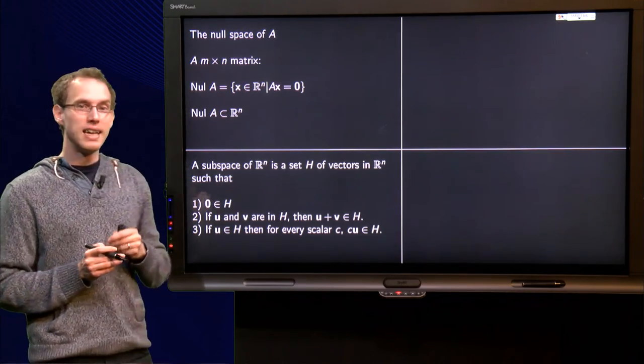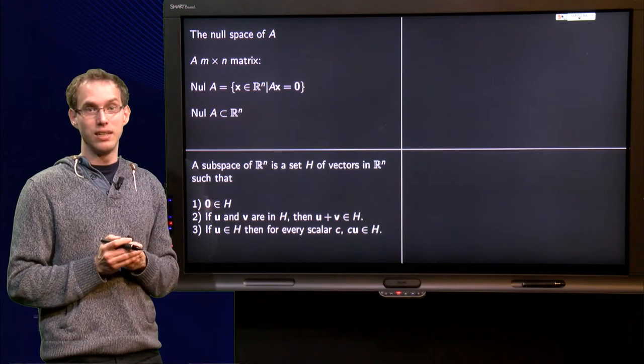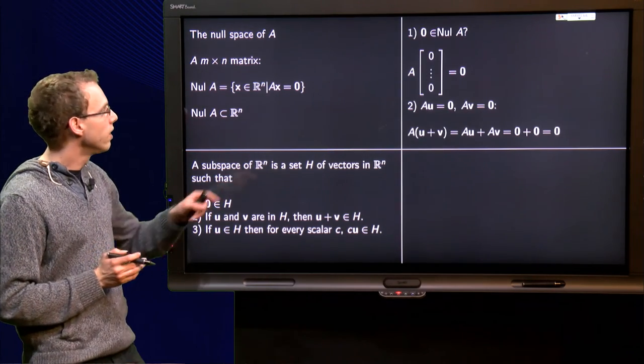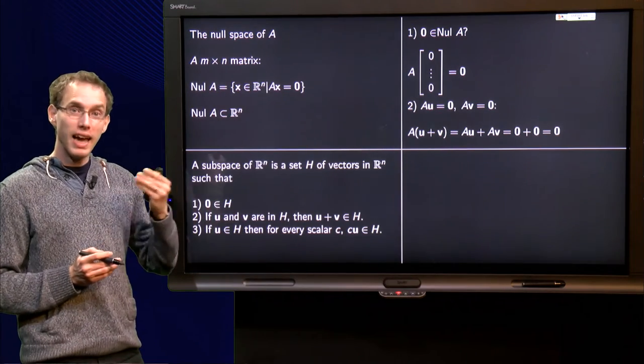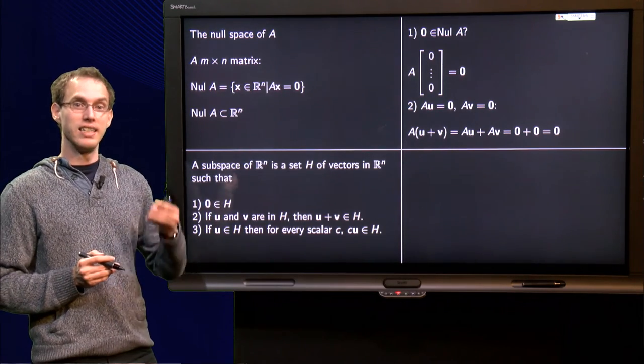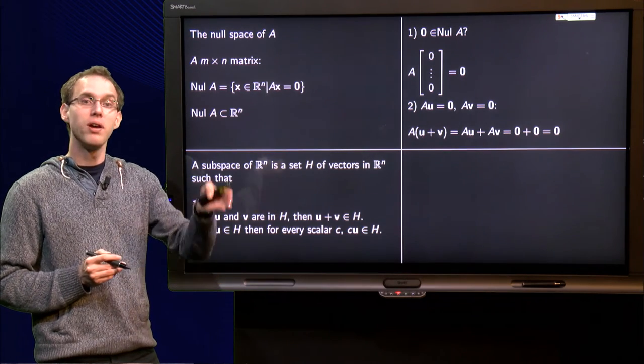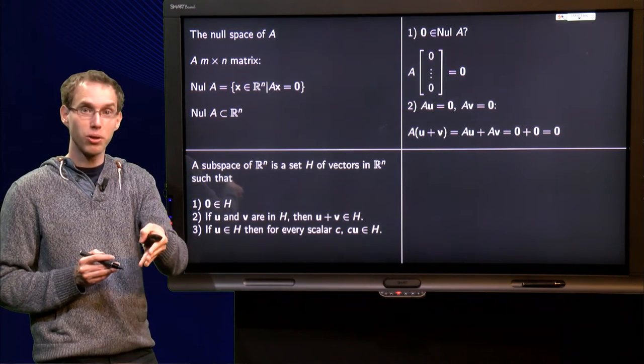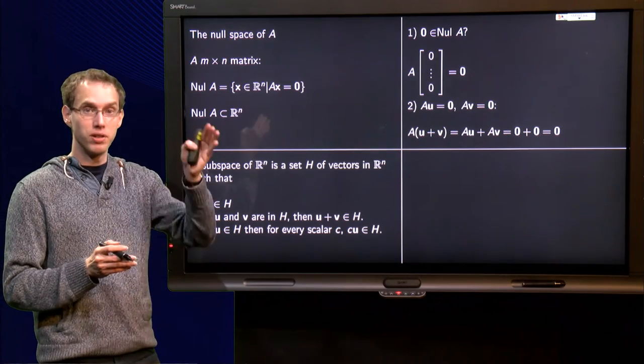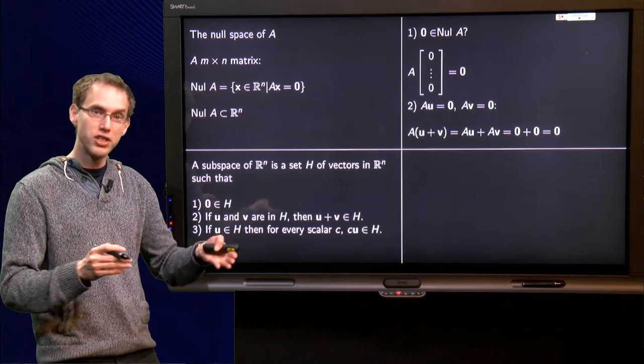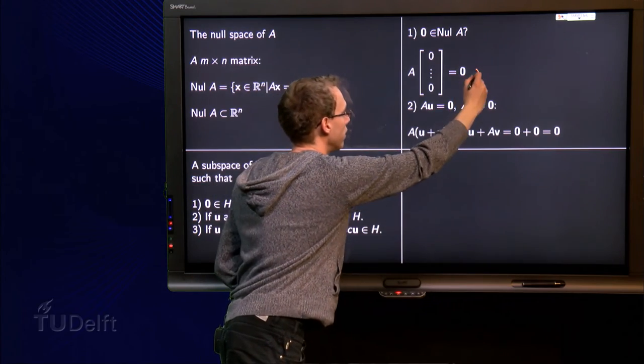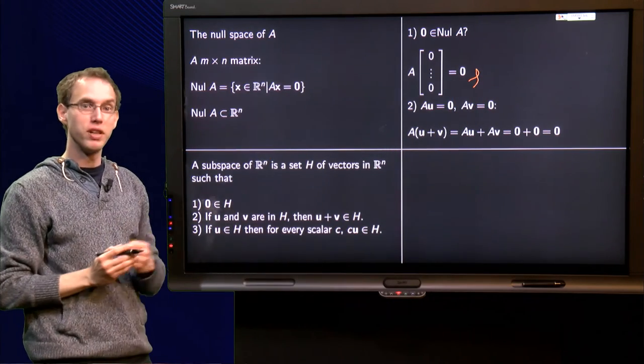First one, is the zero vector in the null space? Well let's try. If we compute A times the zero vector, I get zero times the first column of A plus zero times the second column of A, until zero times the last column of A, which yields zero plus zero plus zero vector equals the zero vector. So that is correct, zero vector is indeed in the null space of A.